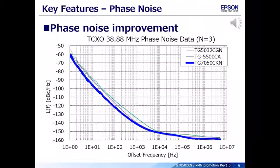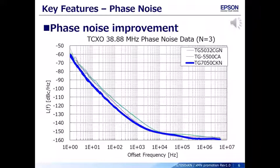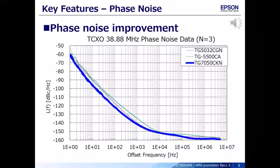This product improves the phase noise at a near-carrier offset frequency of 1 Hz to 1 kHz — the critical range for synchronous network systems — by up to about 10 dB. This is achieved by reviewing the configuration of the active elements that make up the oscillation circuit section, adopting low-noise elements, and improving the circuit design. It is compatible with both low noise and the expansion of the operational temperature range.